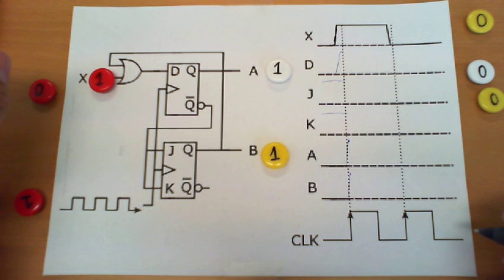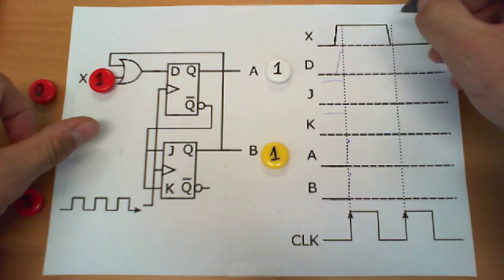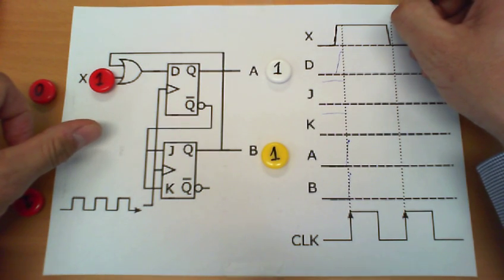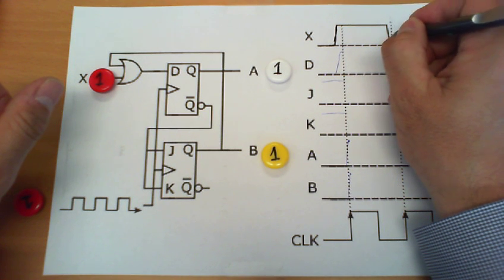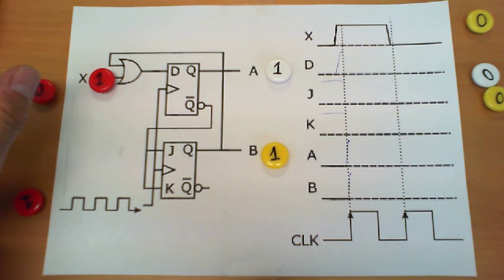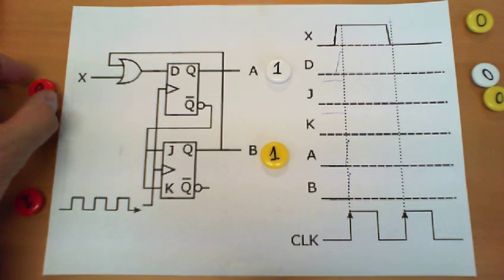Now from here what we do is reevaluate again the entire circuit. But now we have to go to the second edge of the clock right here. And we go precisely to the value before the edge. In that value before the edge, the value of X switches from 1 to 0.